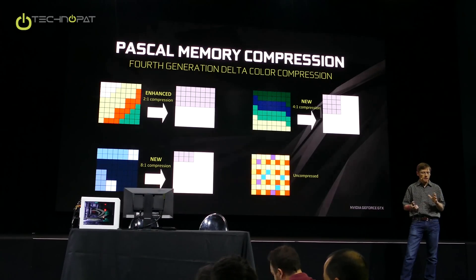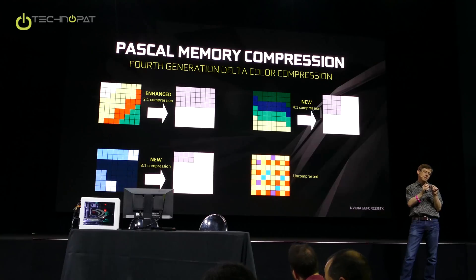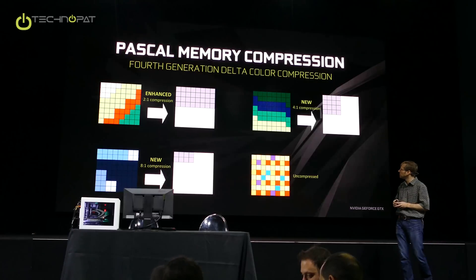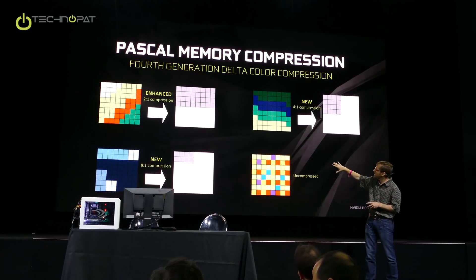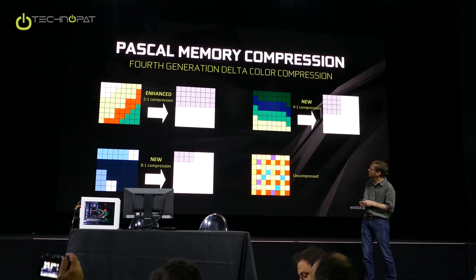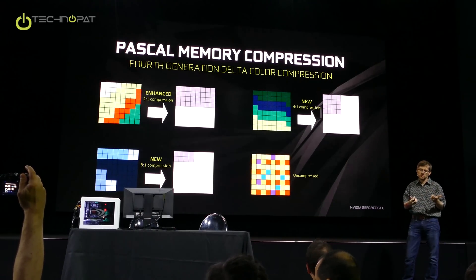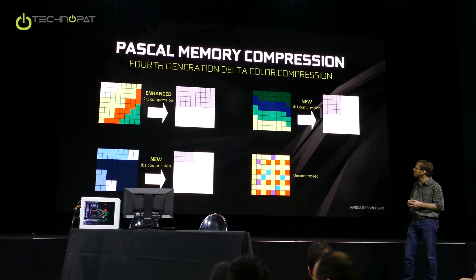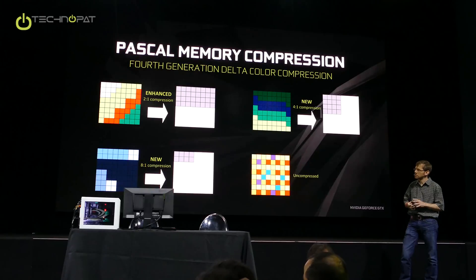Delta color compression is the idea that you actually analyze the individual pixel values. You do math and look for pixel values that are very close to each other in absolute value — you save one of those values and then save the difference between them as the residual. In the picture on the left showing a green gradient, those light green and darker green colors are close enough that instead of 32 bits each, you'd store 32 bits for one and maybe just four bits for the other. That's our two-to-one compression mode, which we've had since Maxwell.